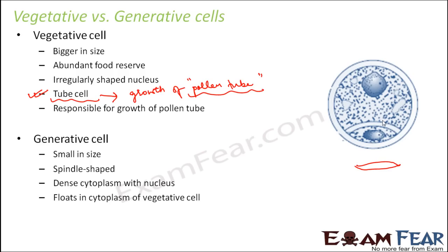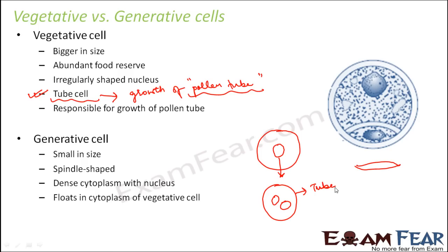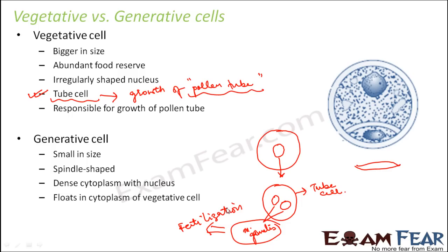So it is like floating in the cytoplasm of the vegetative cell. As discussed previously, the generative cell undergoes mitosis — also known as the pollen second mitosis — and forms two cells. The outer cell is the vegetative cell or tube cell, which helps in the growth of the pollen tube. The two cells formed inside give rise to the male gametes, which help in fertilization. Even though the generative cell directly gives rise to the male gametes, the vegetative cell is equally important because without it, fusion will not be able to take place.